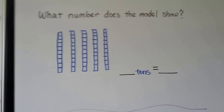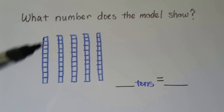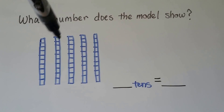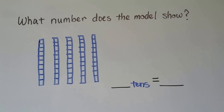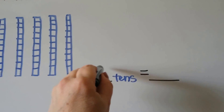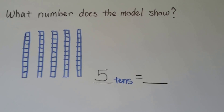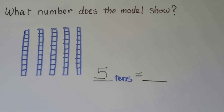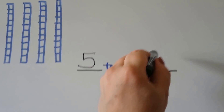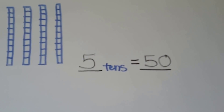So what number does this model show? We've got a bar of ten and we've got one, two, three, four, five of them. That means we have five tens. Five tens is equal to what number? It would be five tens and zero ones — it would be fifty.